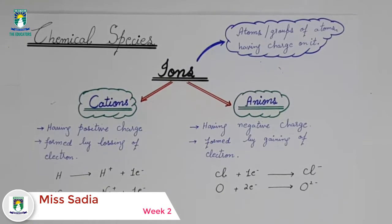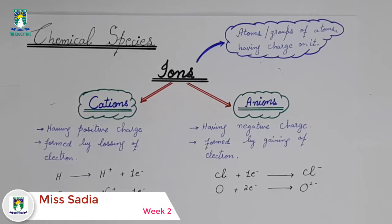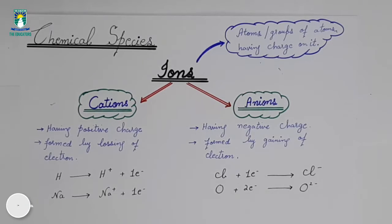Now, we are going to explain some chemical species which are used in chemistry like ions, molecules, and atoms. We will elaborate on these and see how they are represented and how they differ from each other.